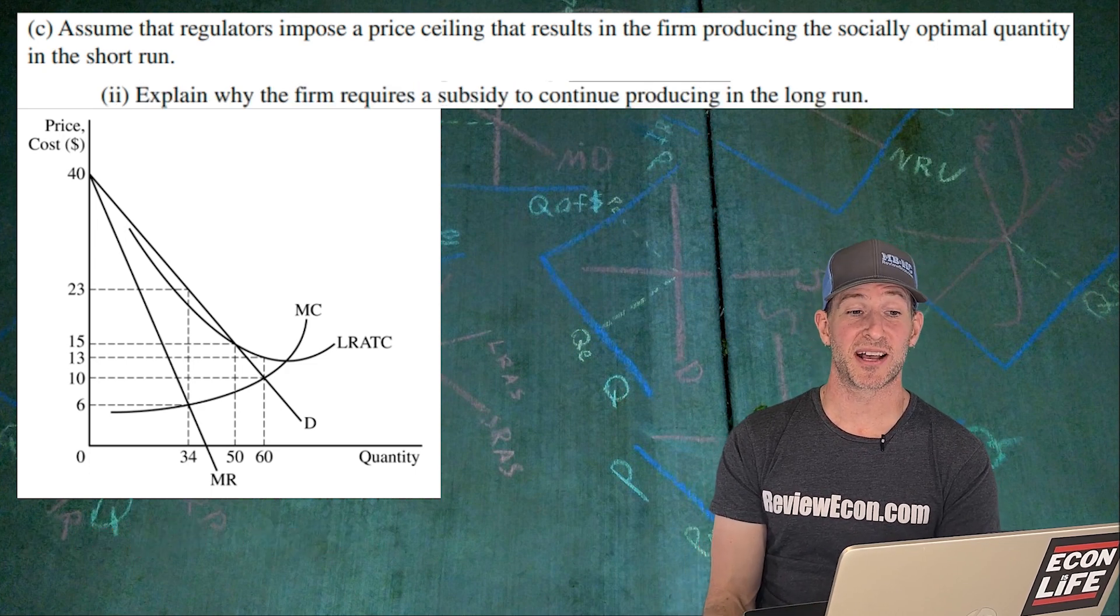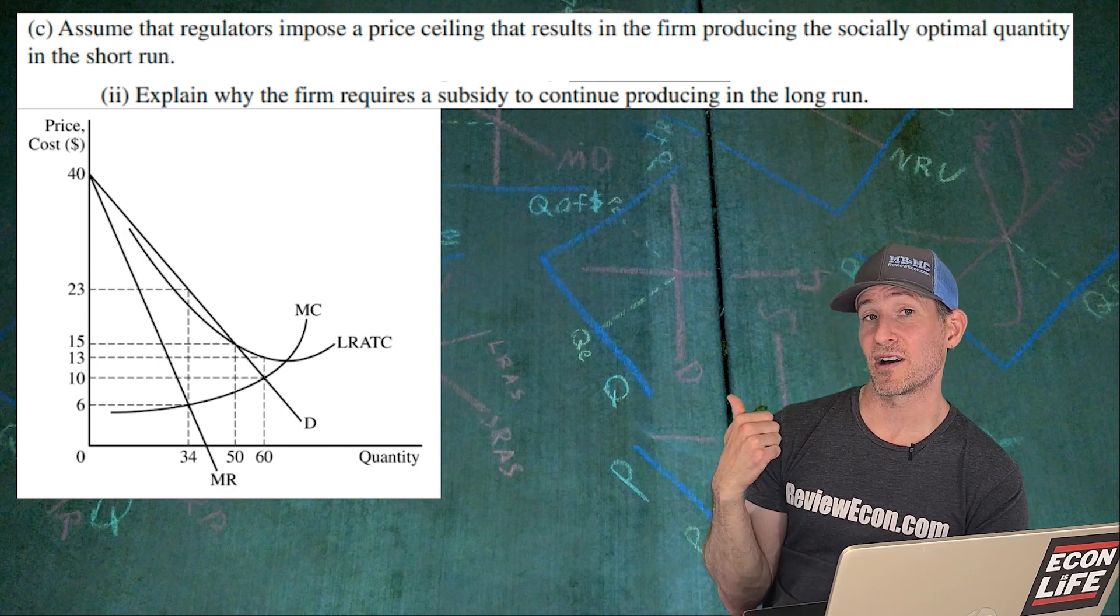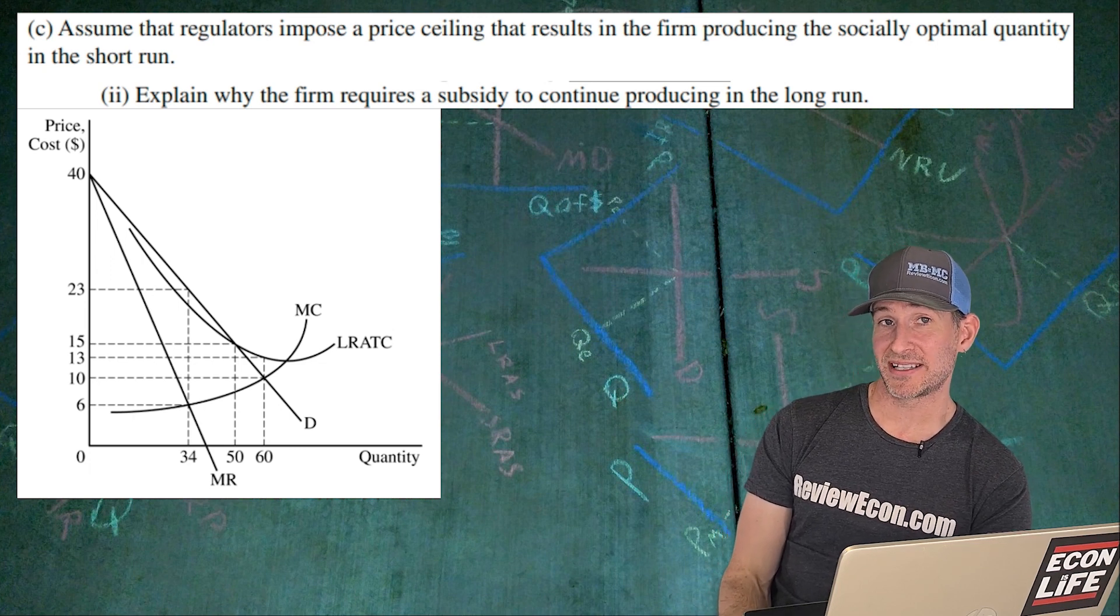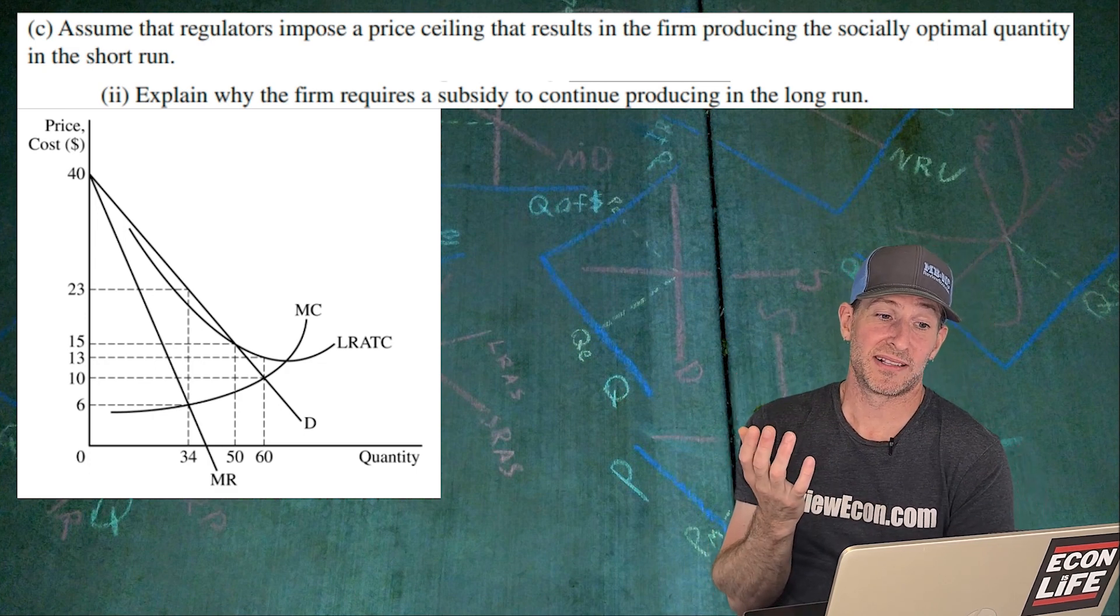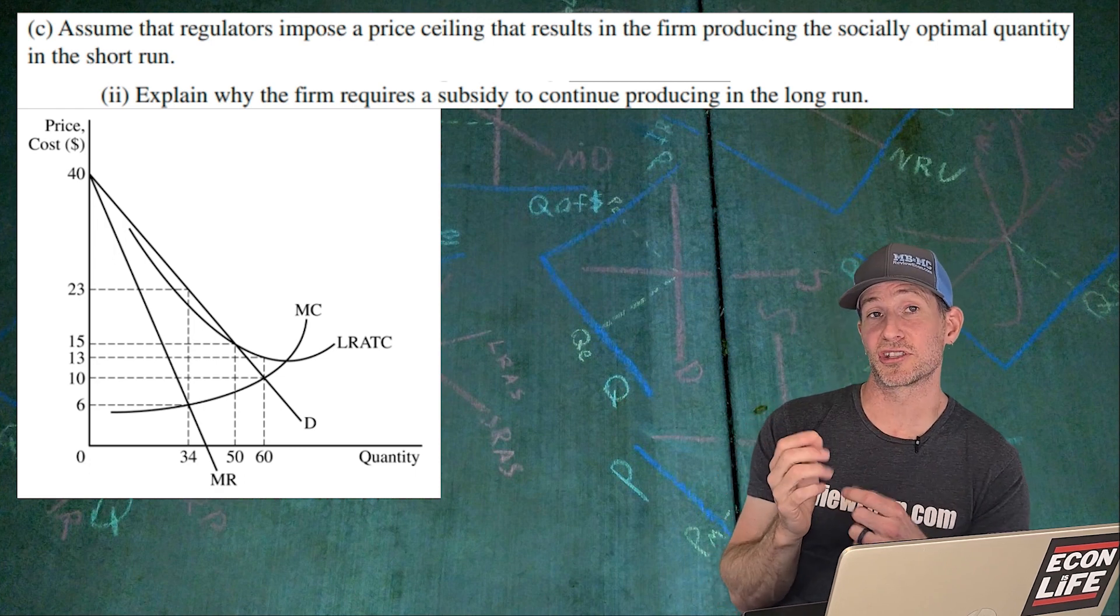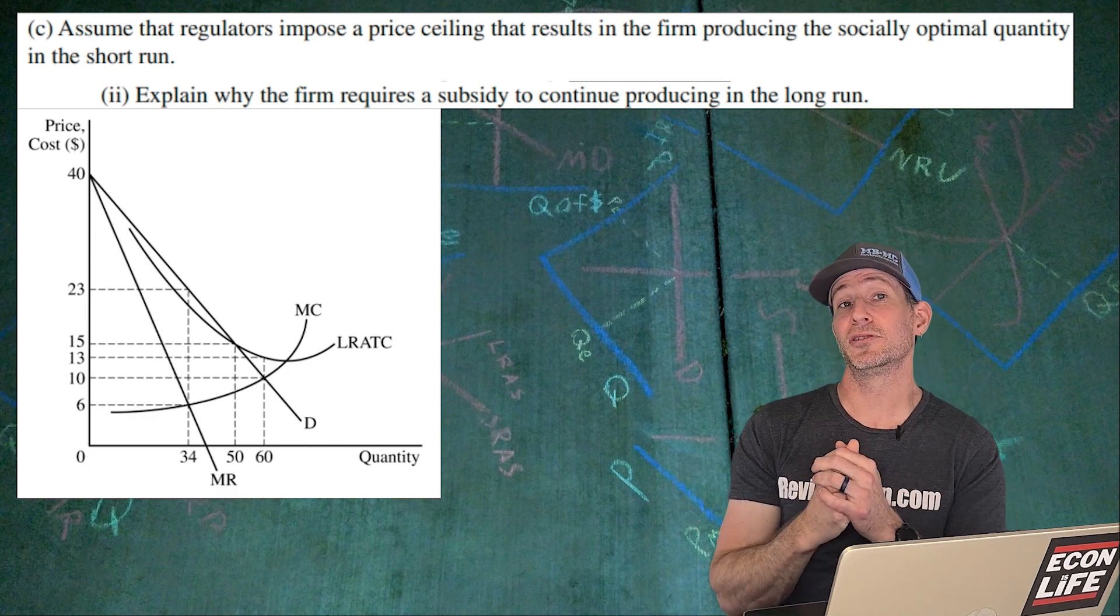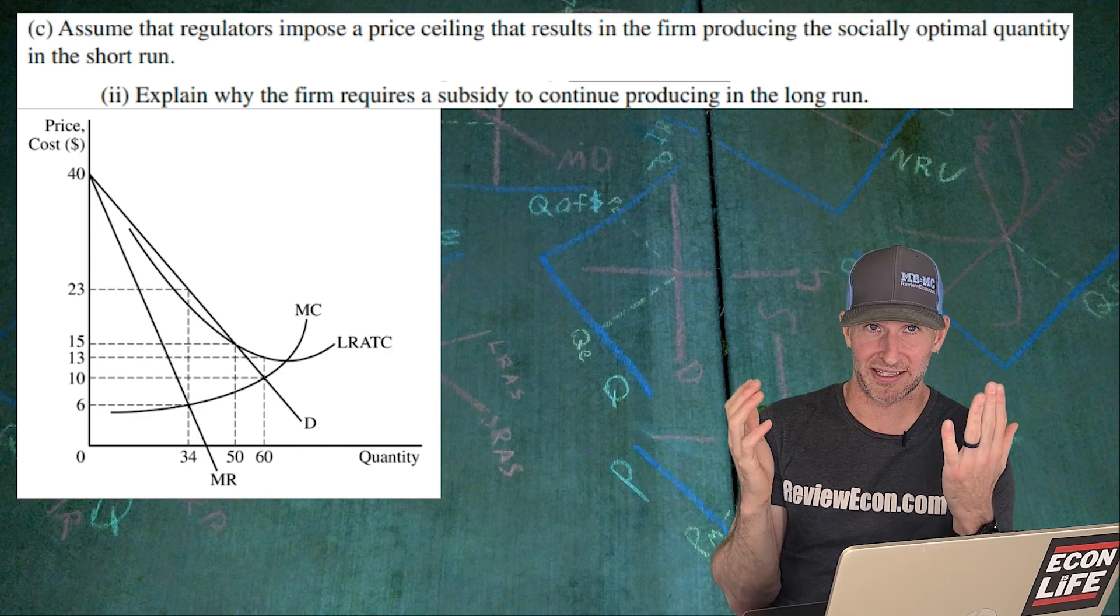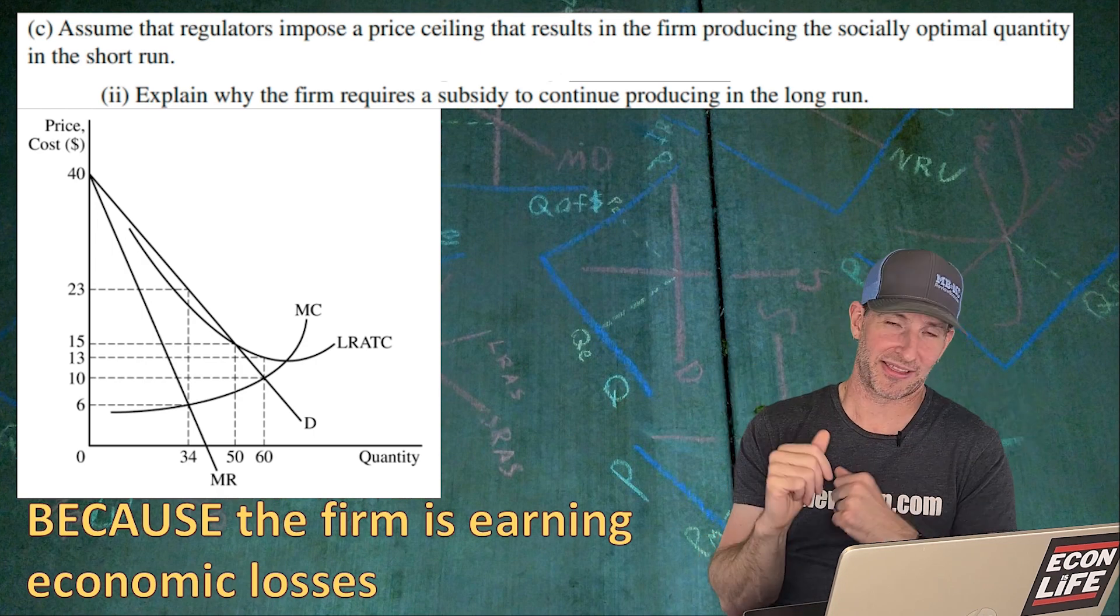Explain why the firm requires a subsidy to continue producing in the long run at that socially optimal quantity. Well, at that socially optimal quantity of 60, you can see that the average total cost is above our price. So our price is going to be $10, but the average total cost is higher at 13. So this firm is losing money. And they're actually suffering economic losses. That means their resources would be better suited to other things. They'd be more profitable to other things. So if they are forced to lose economic money or earn economic losses in the long run, they're just going to shut down permanently and they'll leave the market. They'll exit the market. So here's my answer there. Because the firm is earning economic losses. There you go. I think that'll be enough.